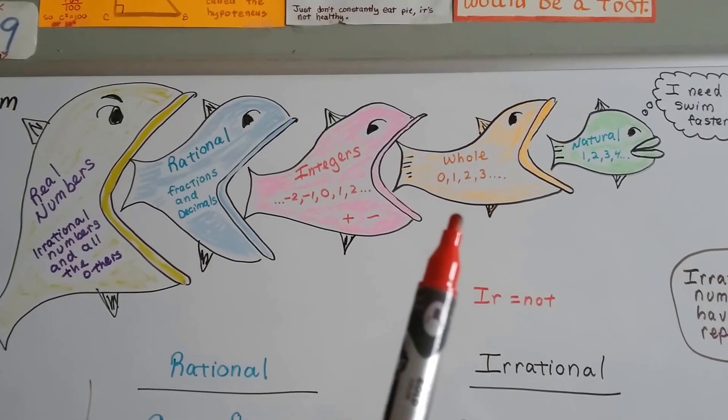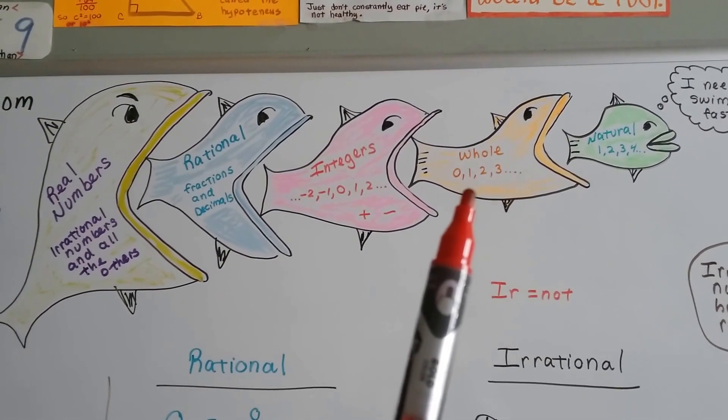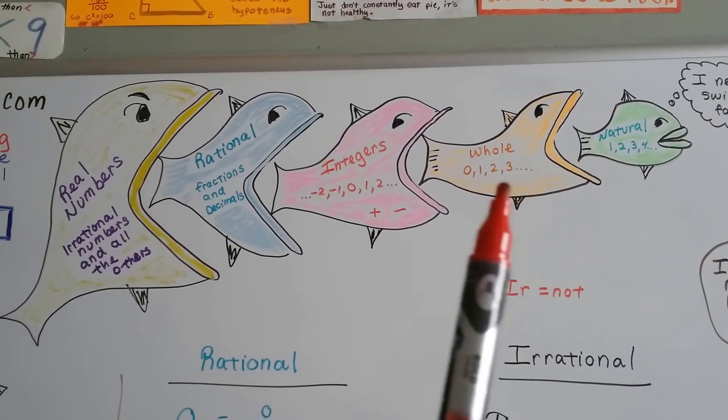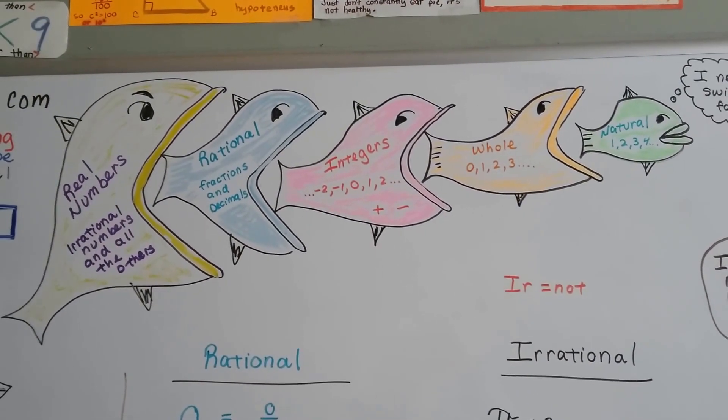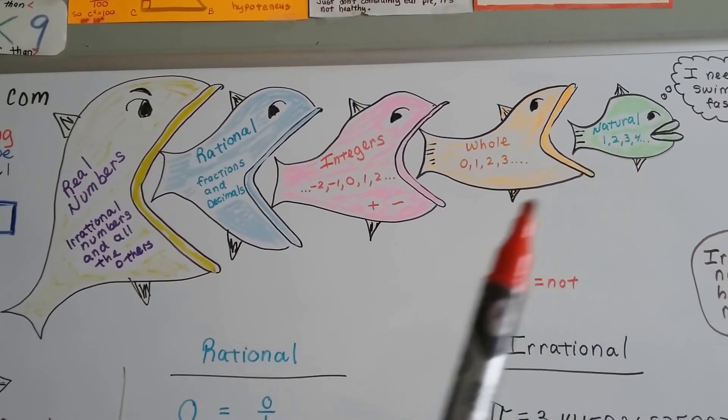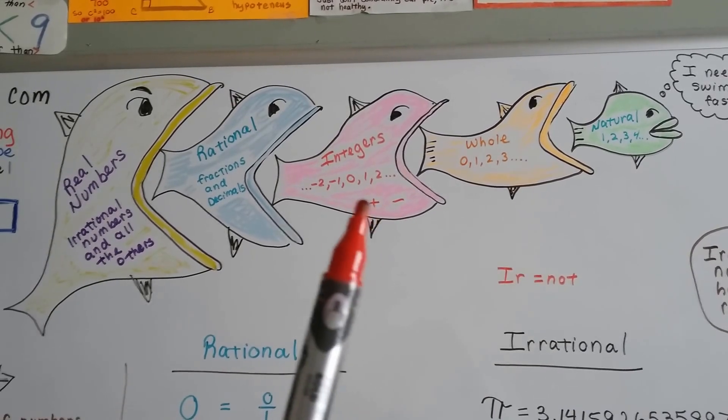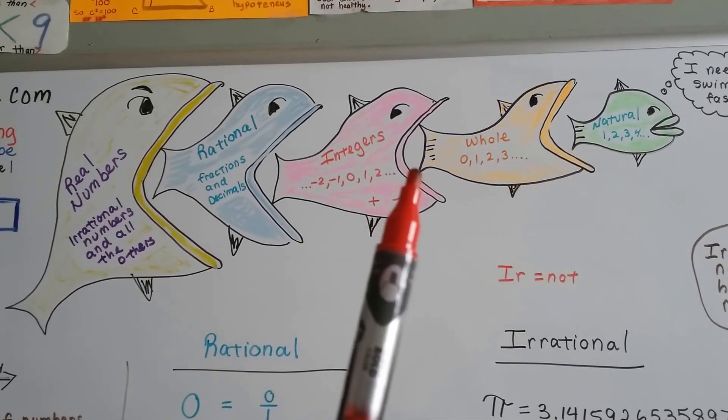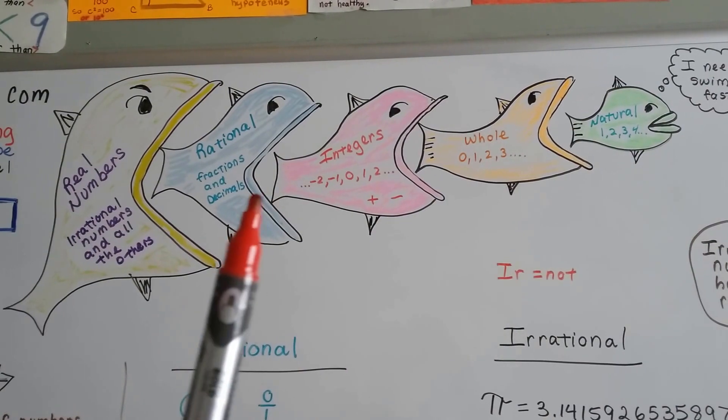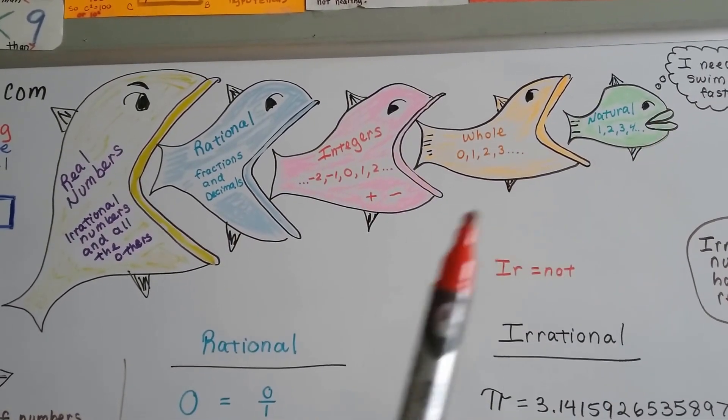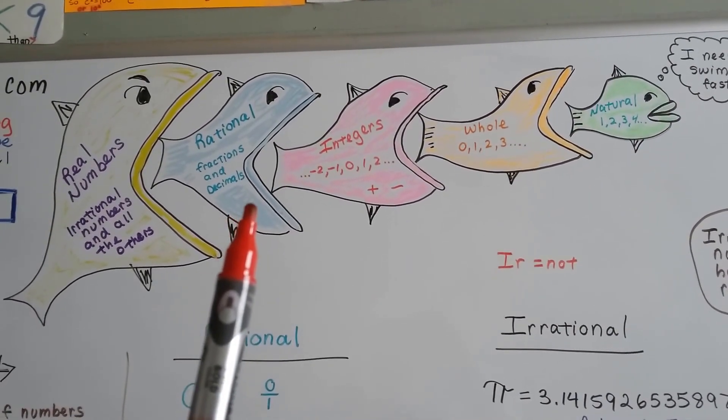Whole numbers include the natural numbers and add zero to the list. Integers include whole numbers and natural numbers, and now we're adding the negative and positive numbers. Rational numbers include all of these types of numbers, plus fractions and decimals.